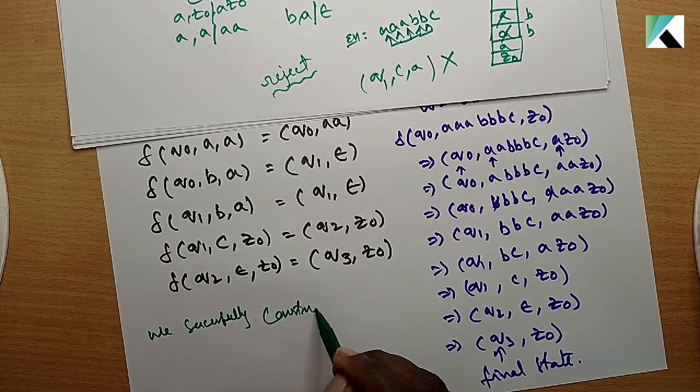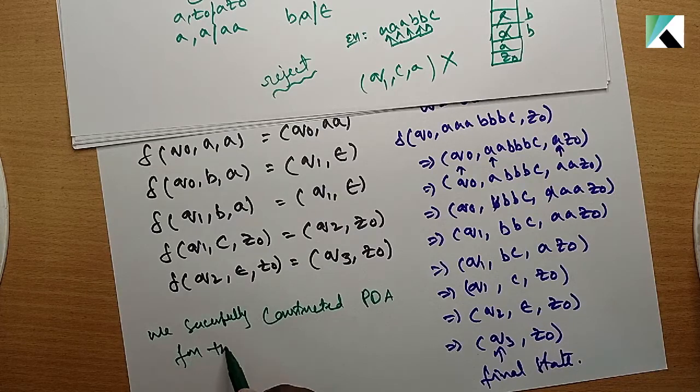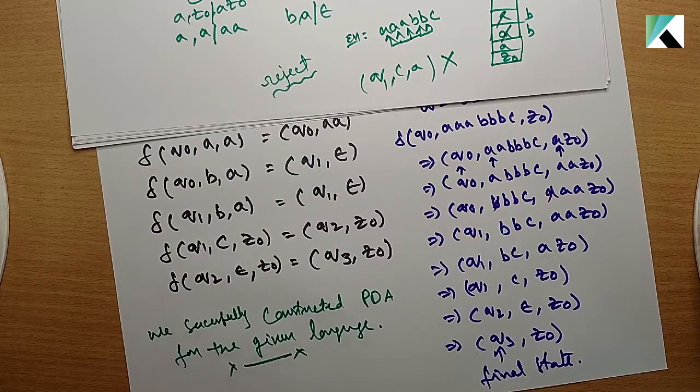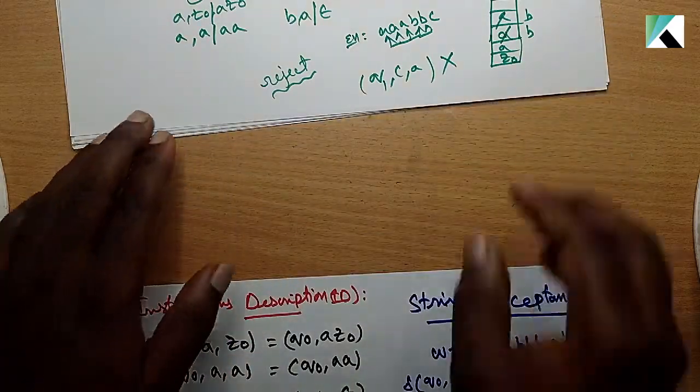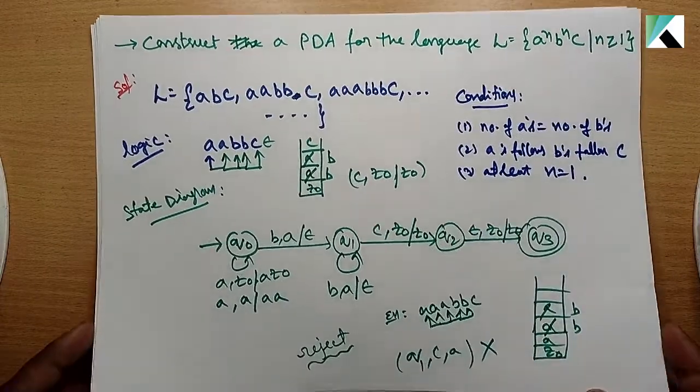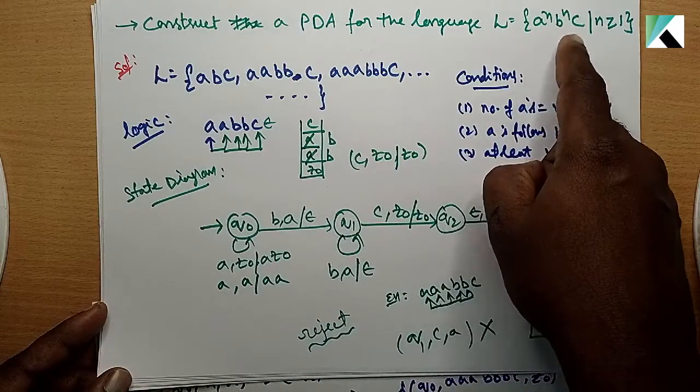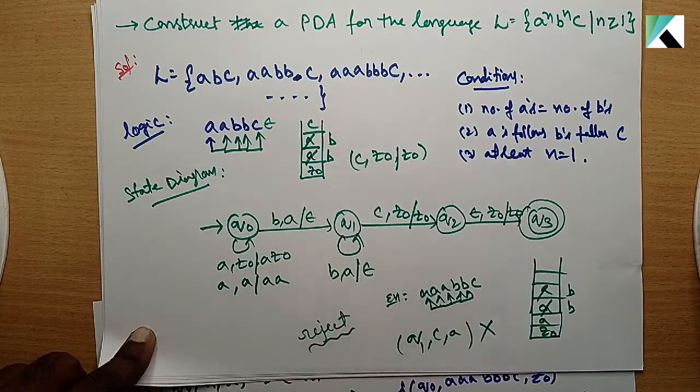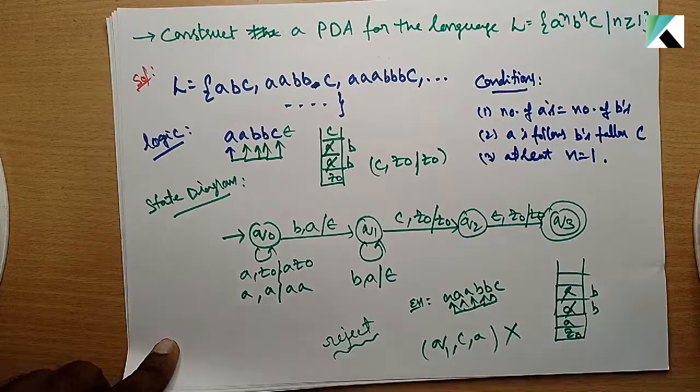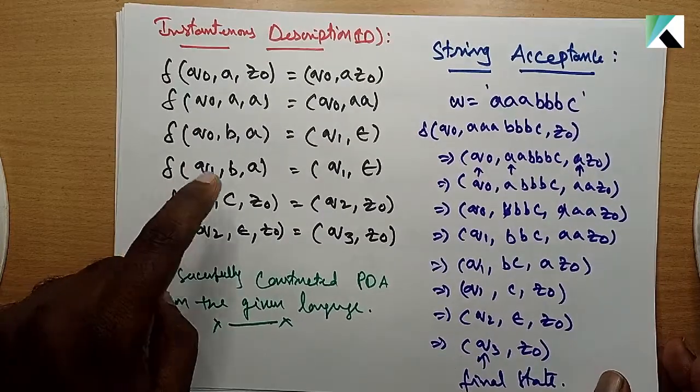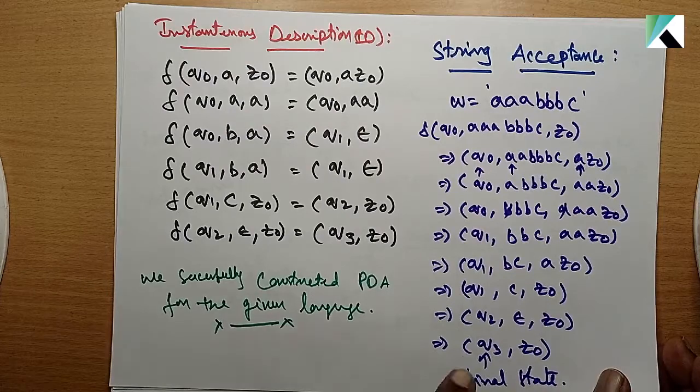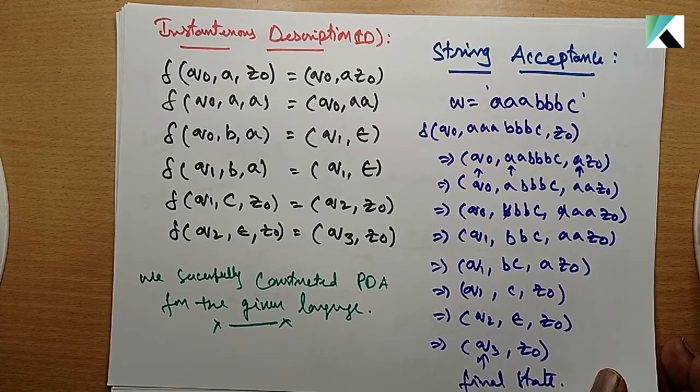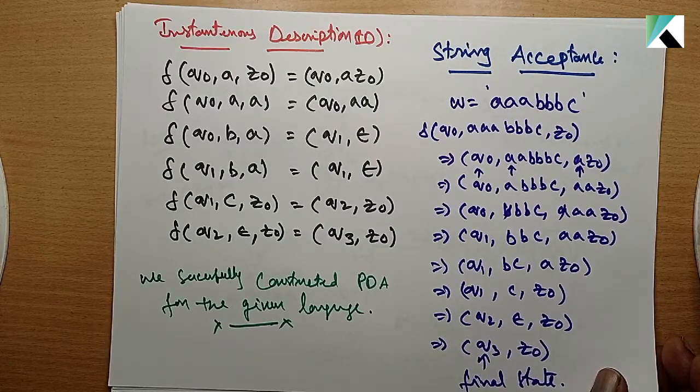Successfully constructed PDA for the given language. Construct PDA for L equals A power N, B power N, C. Define the language, conditions, find the logic. Finally, state diagram based on instantaneous descriptions. This is how we work with PDA for this type of language. Thanks for watching, please like, subscribe, and share.